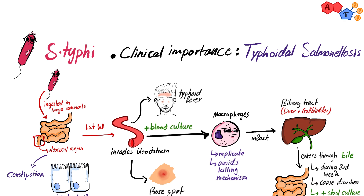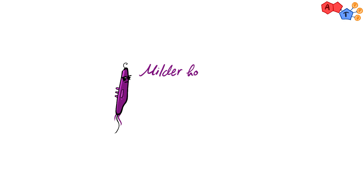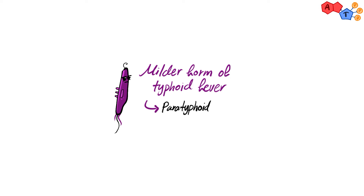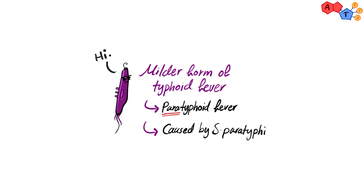There is also a milder form of typhoid fever, which is called paratyphoid fever, and this is caused by another species called S. paratyphi. And that's it for typhoidal Salmonellosis.